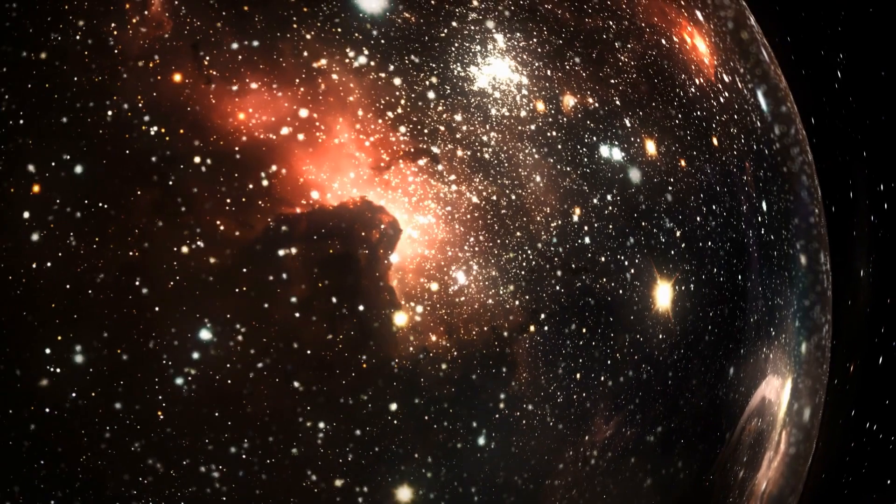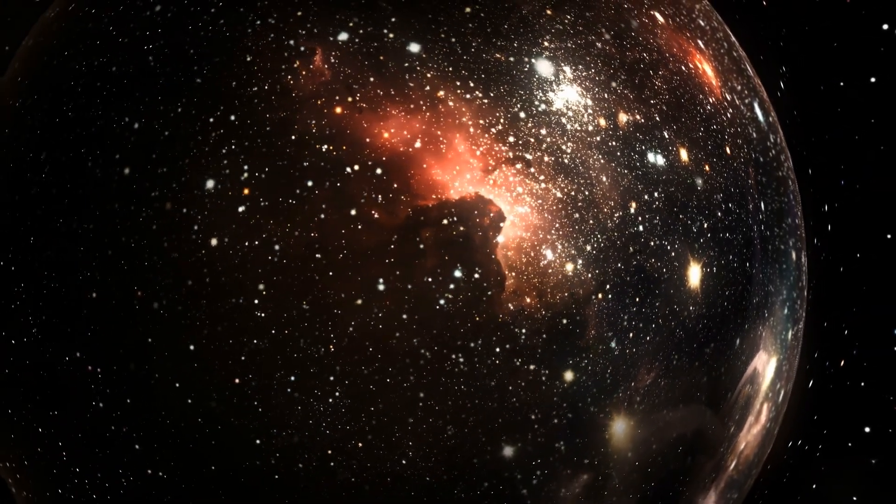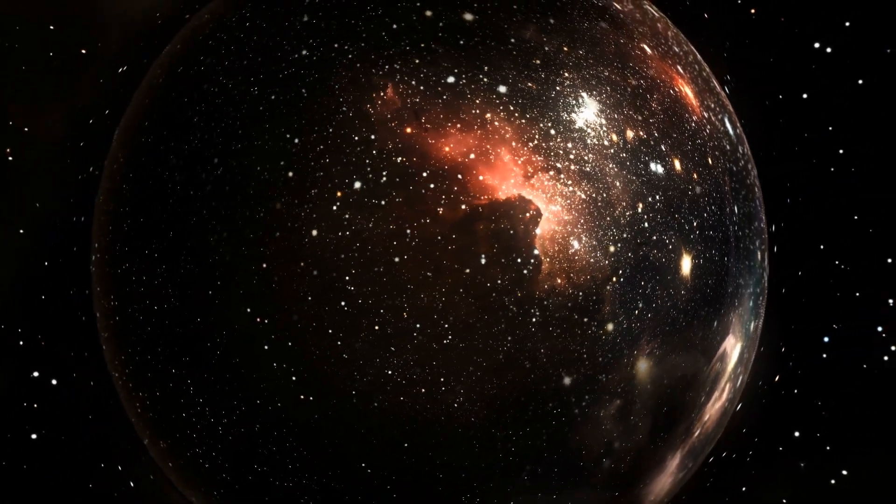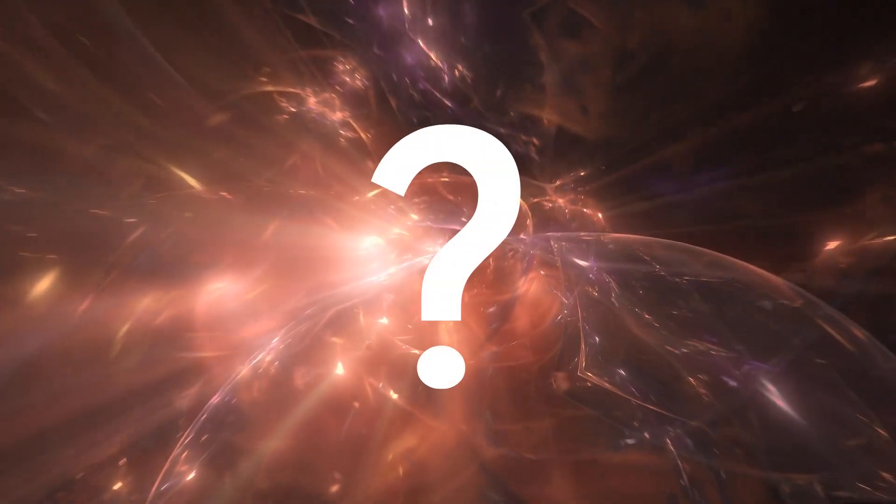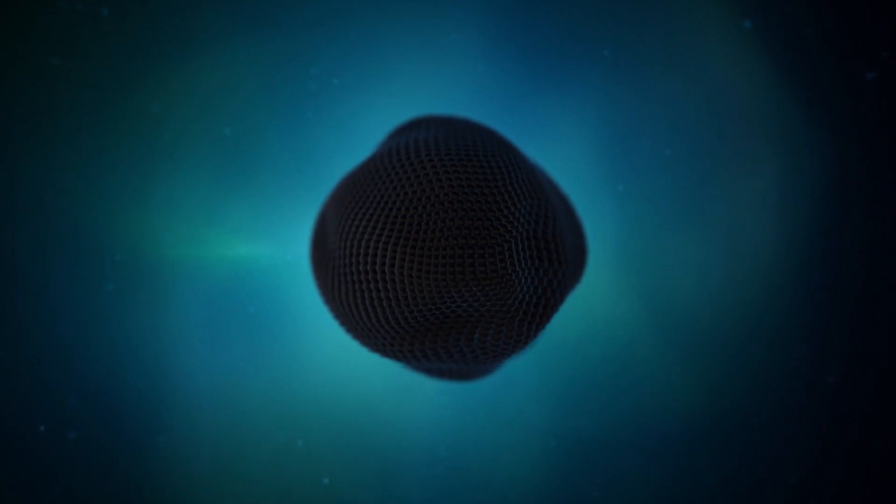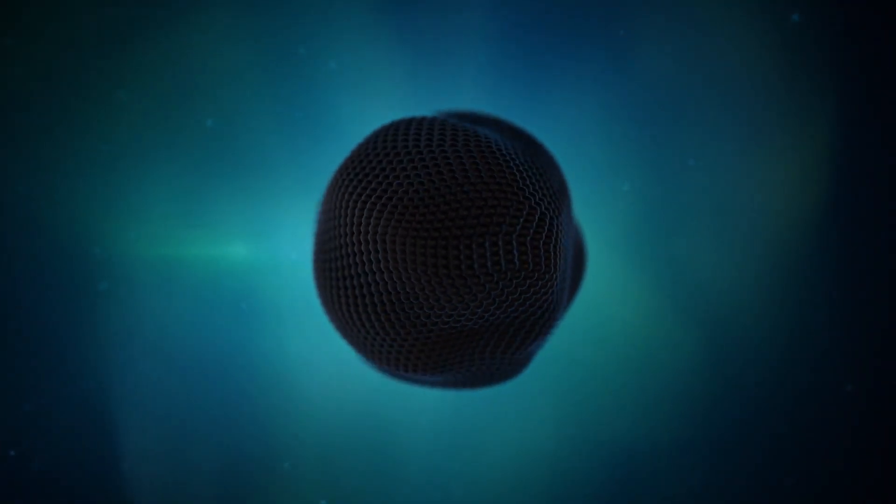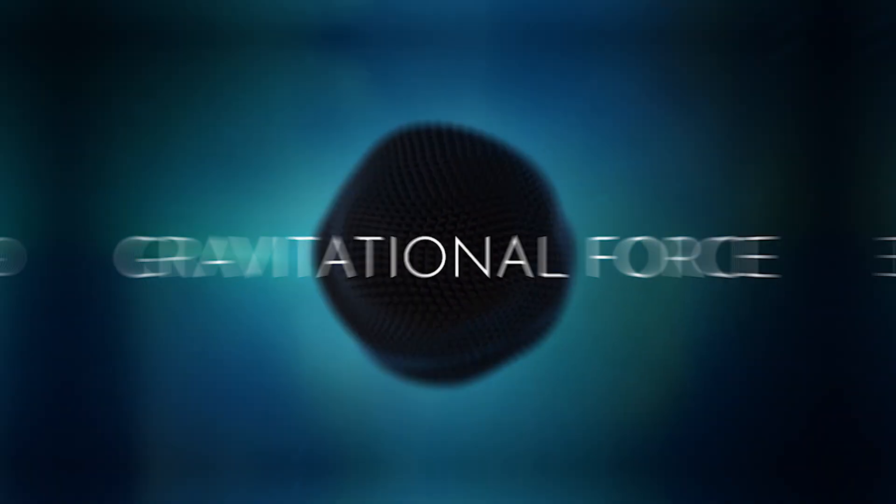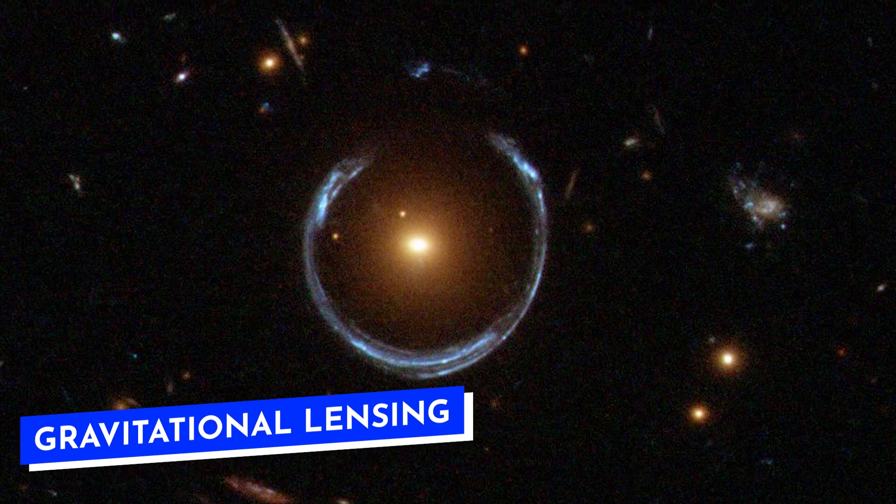But now, the question might arise: the universe we see today, for example, stars, galaxies, and planets are just 5%, which means the remaining 95% is non-physical? Well, that's not the case. Dark matter interacts via the gravitational force, and it does cause gravitational lensing, which is a physical effect. Hence, we know it is there, but we don't know what it's made of.